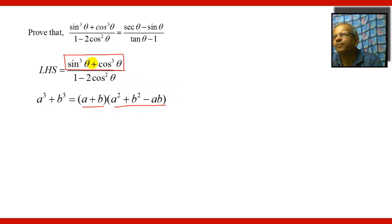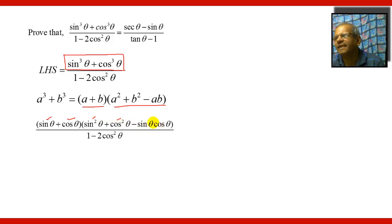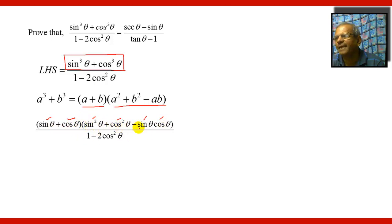So, sin³θ + cos³θ will become (sinθ + cosθ) into bracket (sin²θ + cos²θ − sinθcosθ), upon 1 minus 2cos²θ.